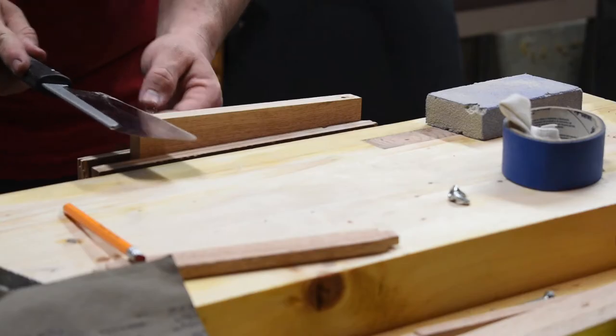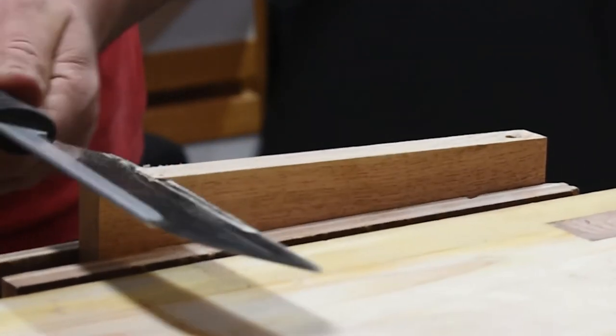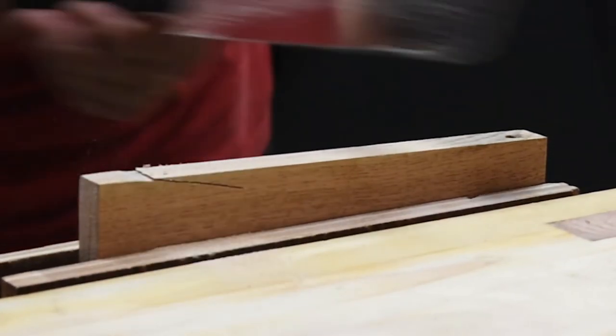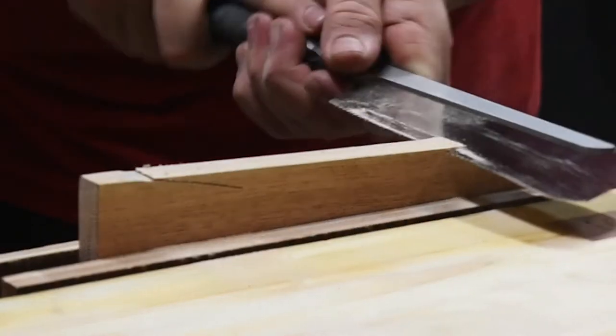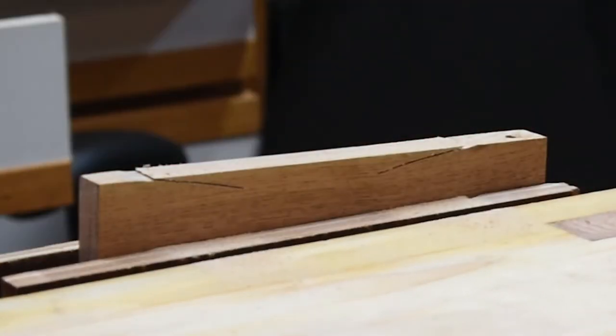So here for the other handle or side support I am just following the exact same process. Drawing on the design on the wood, doing the rough cuts with the pull saw, coming through with the rasp and sandpaper to round over and smooth it out.